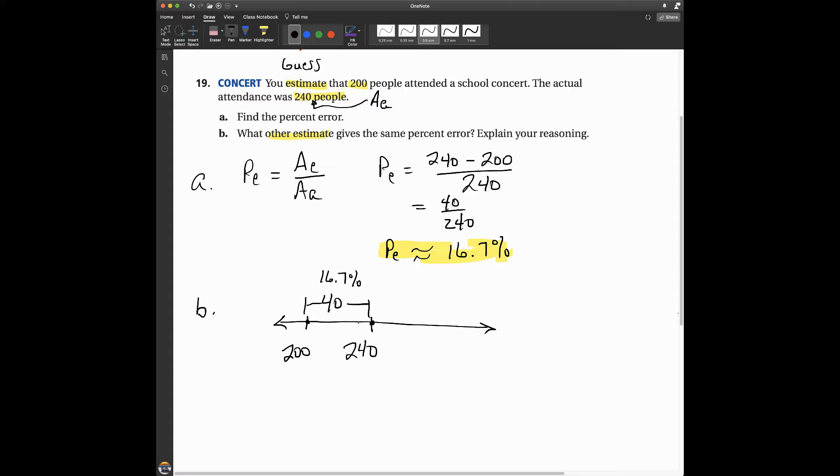Alright, is there another guess? If I look in this direction here, if I keep going this direction, and I make guesses, let's say I guessed 180 or 100 people, this percent of error is going to get bigger. It's not going to be the same. So, I can't find another value going to the left.